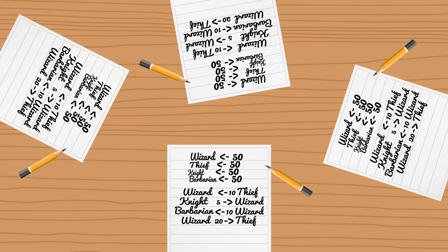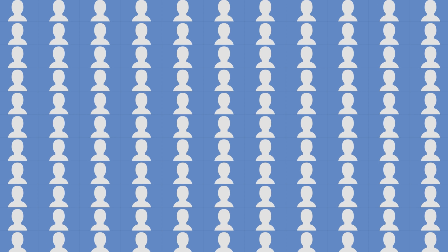You'd need to convince at least half of the players to let you get away with it, which might not be so hard with just four players. But imagine you've got a hundred players, or maybe even a thousand. At that point it would be pretty much impossible to cheat. In fact, at a certain point, you don't even need new players to keep track of transactions — they can spend and receive coins without needing to know anything about what's happening behind the scenes.